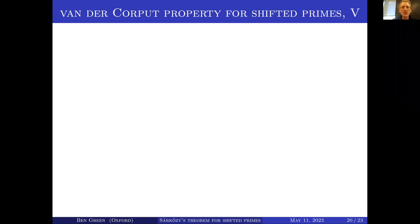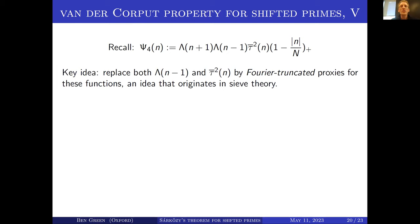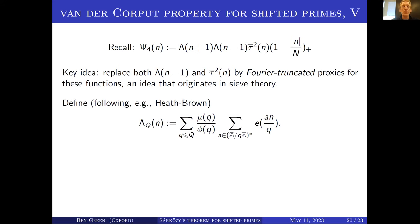So what are we going to do about that? That was our fourth attempt at constructing a function ψ with the van der Corput property. The key idea is to replace some of those terms by what I call Fourier-truncated proxies for these functions — an idea that originates in sieve theory. Take for example λ(n−1), the characteristic function of the primes plus 1. Let's replace it by something that's basically a characteristic function of almost primes but with nice properties on the Fourier side.